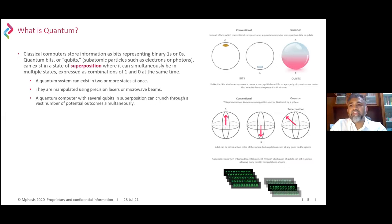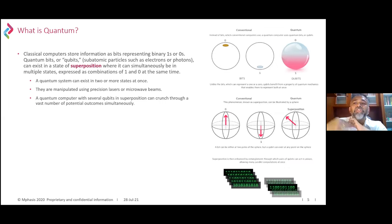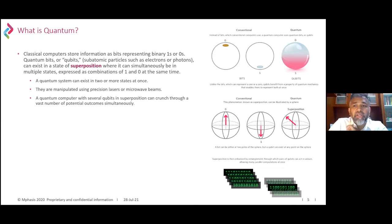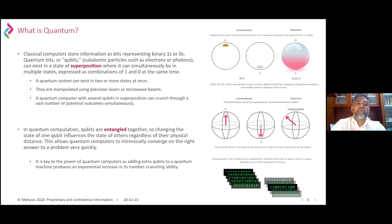These qubit states are manipulated using precision lasers and microwave beams — that's what happens inside a quantum system. It is cooled to a very low temperature and manipulated using lasers. Most importantly, a quantum computer with several qubits in superposition can process vast numbers of outcomes simultaneously because you're not constrained by just zeros and ones. There are many possibilities — it's a very probabilistic computing approach rather than the deterministic zero-and-one approach of classical computing.